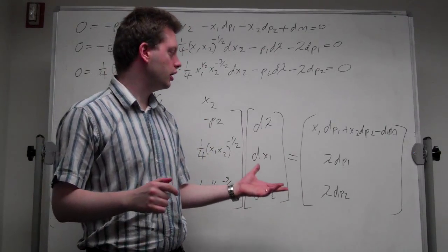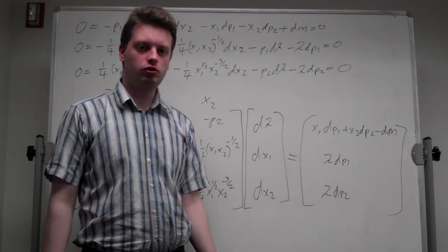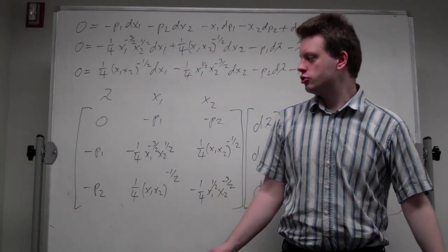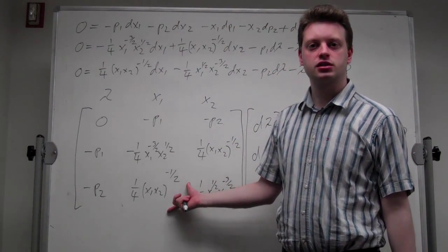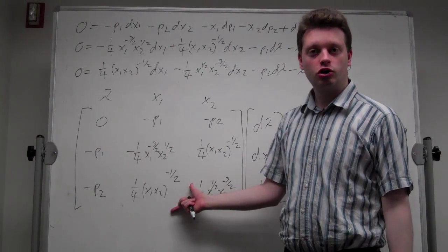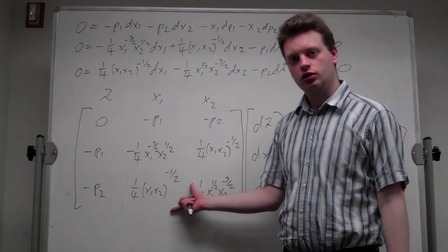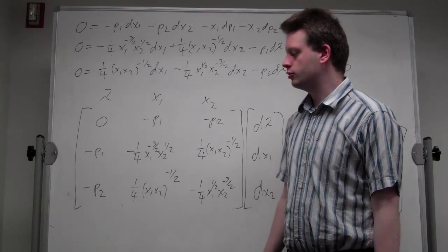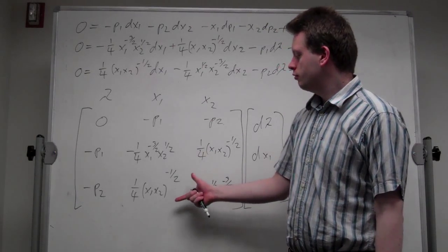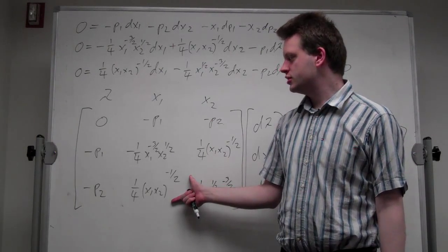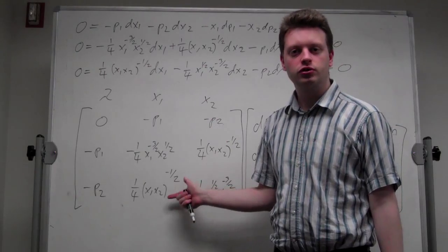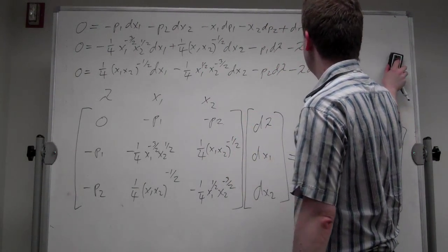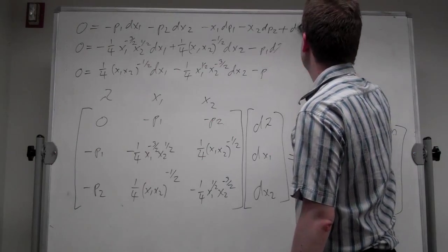If we now want to employ Cramer's rule, the first thing we need is to make sure the determinant of this matrix — which we call the Jacobian in comparative statics, or the Hessian in normal maximization — is not zero. We need it to find the comparative statics.